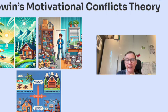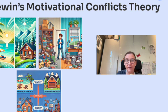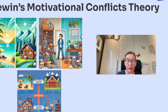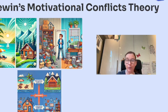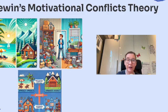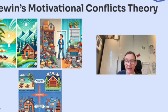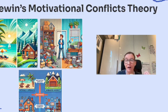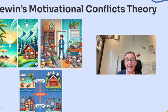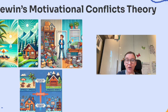Next we'll explore Lewin's motivational conflicts theory, which explains how we deal with tough choices. It's about the conflicts we face when motivated to make a decision but pulled in different directions. There are three types. The first is approach-approach conflict: choosing between two desirable options. For example, deciding between a beach resort vacation and a cabin in the woods — it's a win-win situation, but still hard to pick.